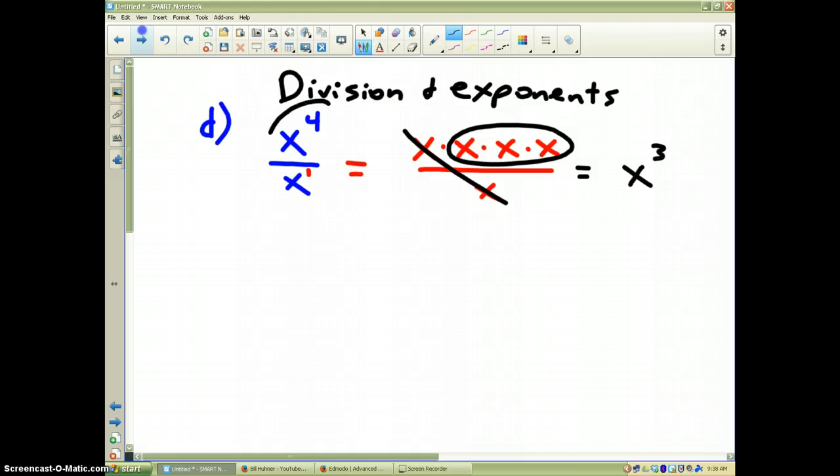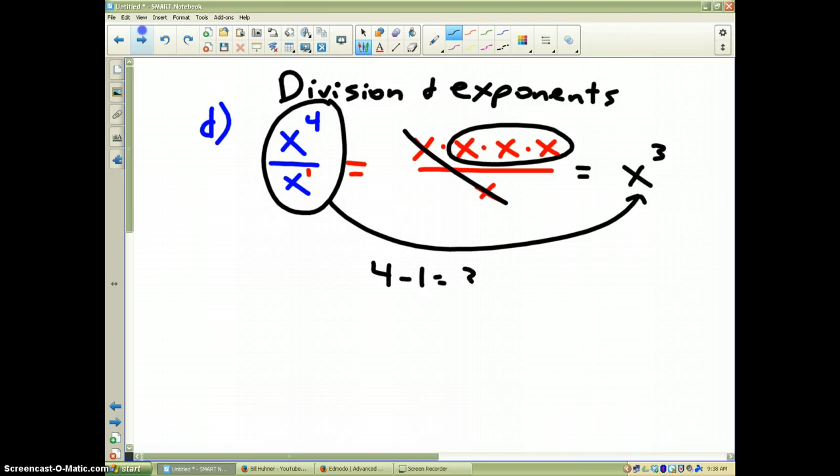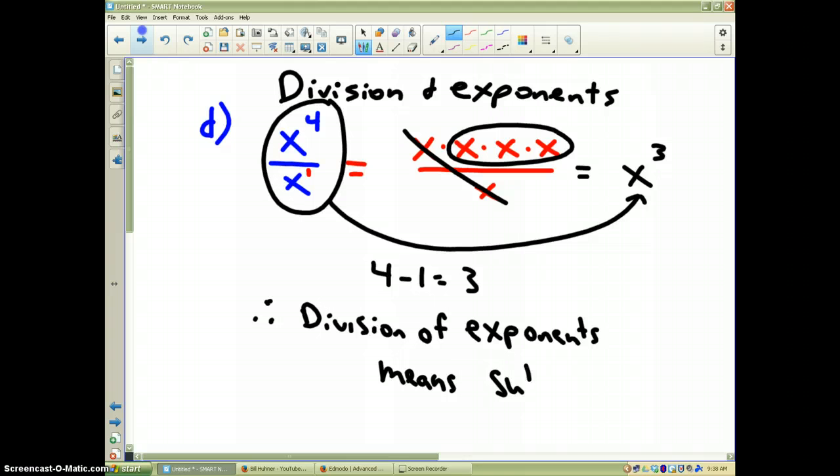Now, how do you take these original powers when you divide and get x to the third? Obviously, you minus them. 4 minus 1 is equal to 3. Therefore, division of exponents means subtract.